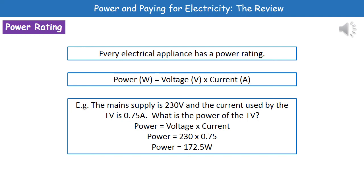Welcome to our review on power and paying for electricity. The first thing we're going to look at is the power rating of appliances. No matter what electrical appliance you have in your home, it has a power rating. The way this is worked out is by using the calculation found on page 2 of the exam booklet, so you don't have to memorize it. Power in watts equals the voltage in volts times by the current in amps.